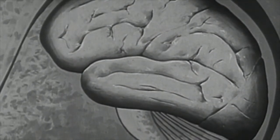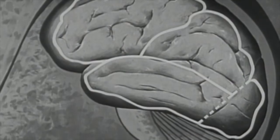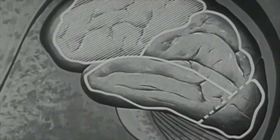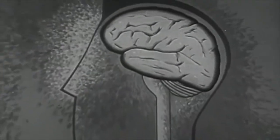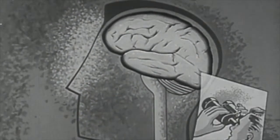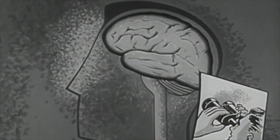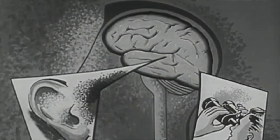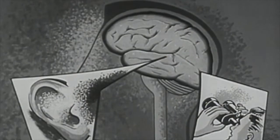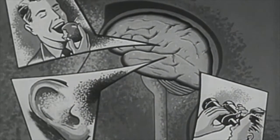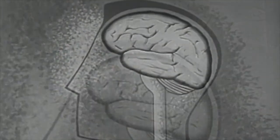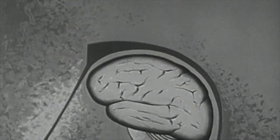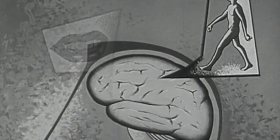Each half of the cerebrum is divided into four lobes: the frontal, parietal, temporal, and occipital lobes. These regions perform a number of specialized functions. Visual stimuli are received in the occipital lobes, sound stimuli in the temporal lobes, taste stimuli in the parietal lobes, and touch stimuli also go to these lobes. In the frontal lobes are located the motor areas controlling movements of the body and above all the organs of speech.